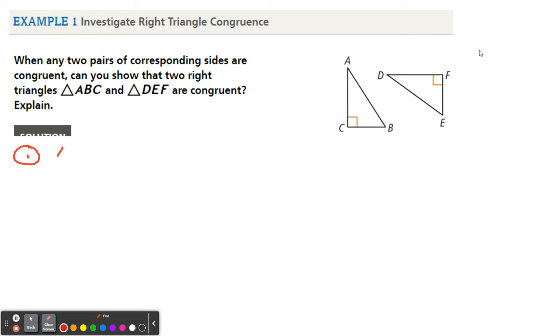All right, so the first one. Let's say we have angle C congruent to angle F. Right? And again, they're the right angles. And then let's also say that segment AC is congruent to DF. So these would just be the legs. So two congruent leg pairs, right? So both legs between your right triangles are congruent.